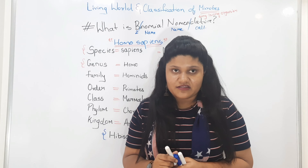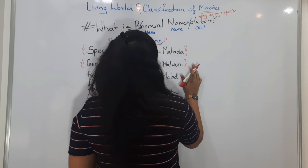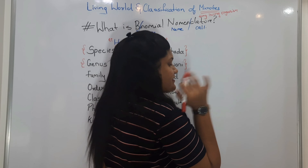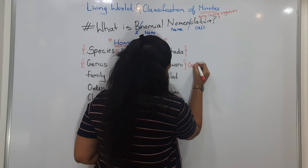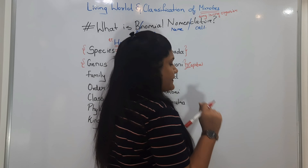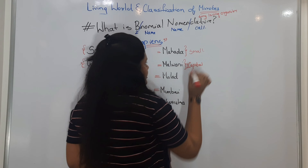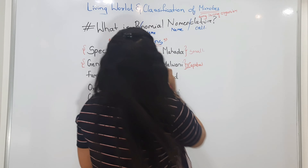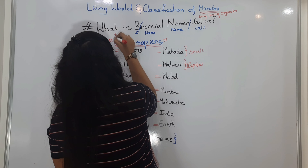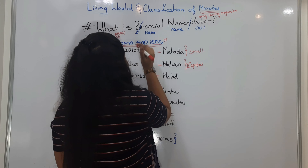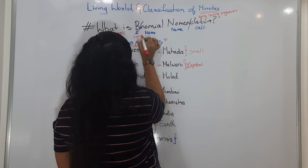Now there are two rules for writing the scientific name. The genus, meaning the generic name, the first letter will always be capital — for example, Homo is written with a capital H. The species, meaning the specific name, will always be written in small letters — for example, sapiens is written in all small letters.